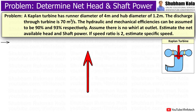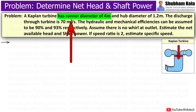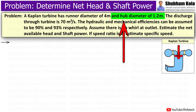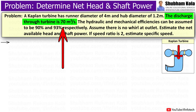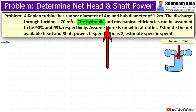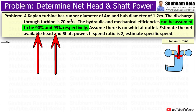The question is given as: a Kaplan turbine has a runner diameter of 4 meters and hub diameter of 1.2 meters. The discharge of the turbine is 70 cubic meters per second. The hydraulic and mechanical efficiencies can be assumed to be 90% and 93% respectively.